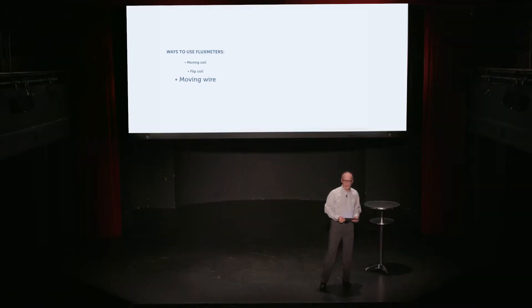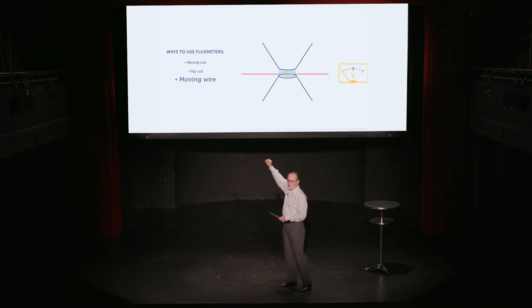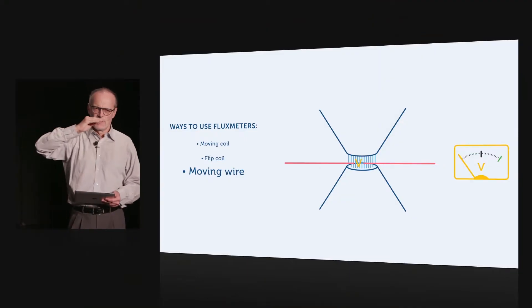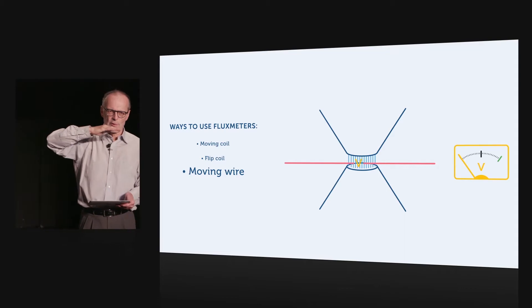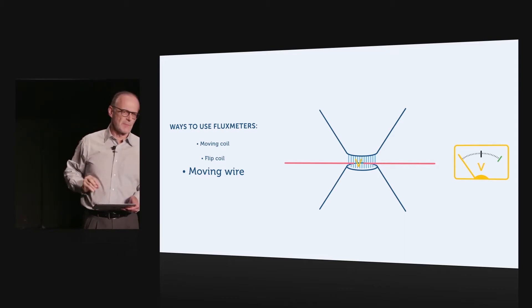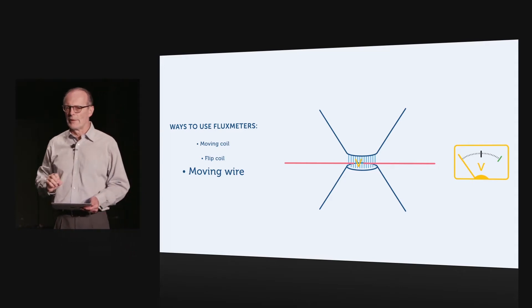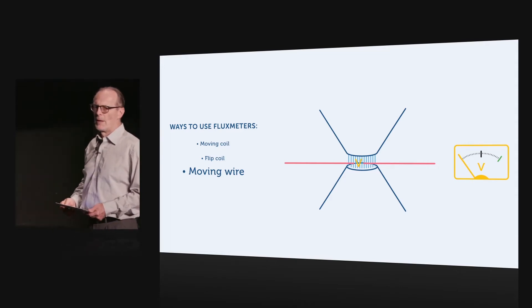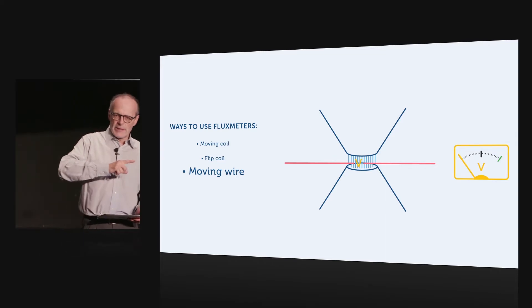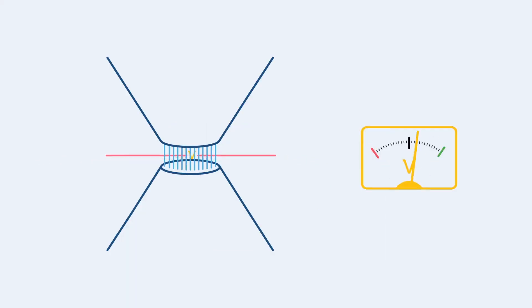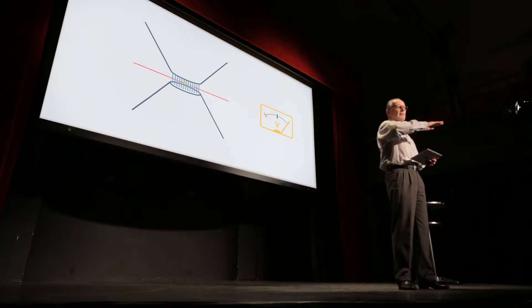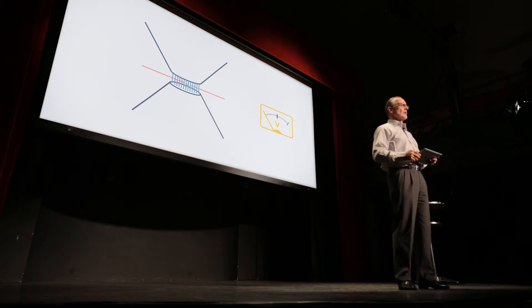Another configuration is the moving wire configuration. This is often used for very narrow gaps when you have to fit through the north and south pole of a magnet that's only separated by a millimeter, where you can't fit a coil in there. This is often the only solution. So the idea here is that the area of the coil that we're talking about is actually the area swept out by the wire as it goes through the gap.